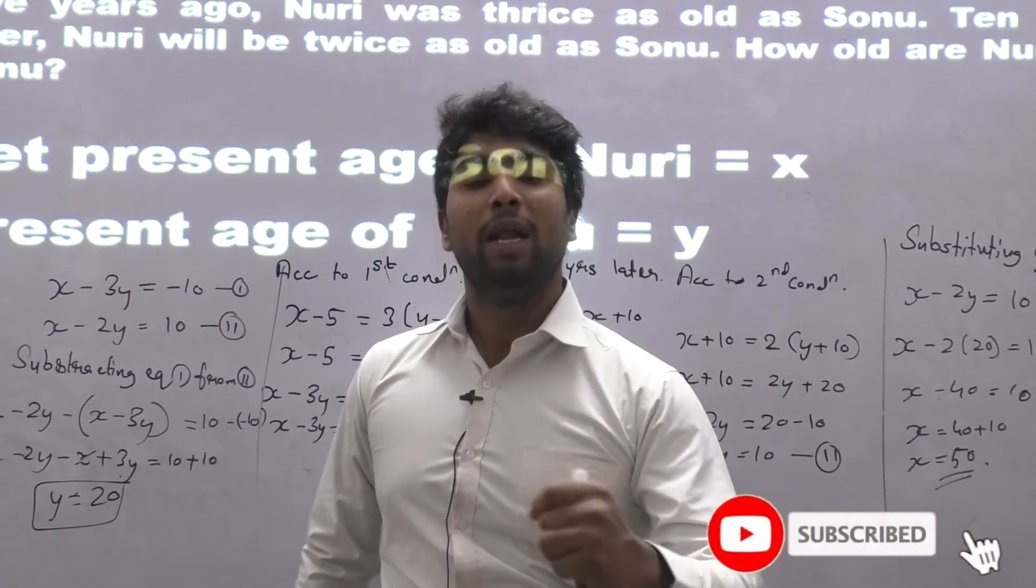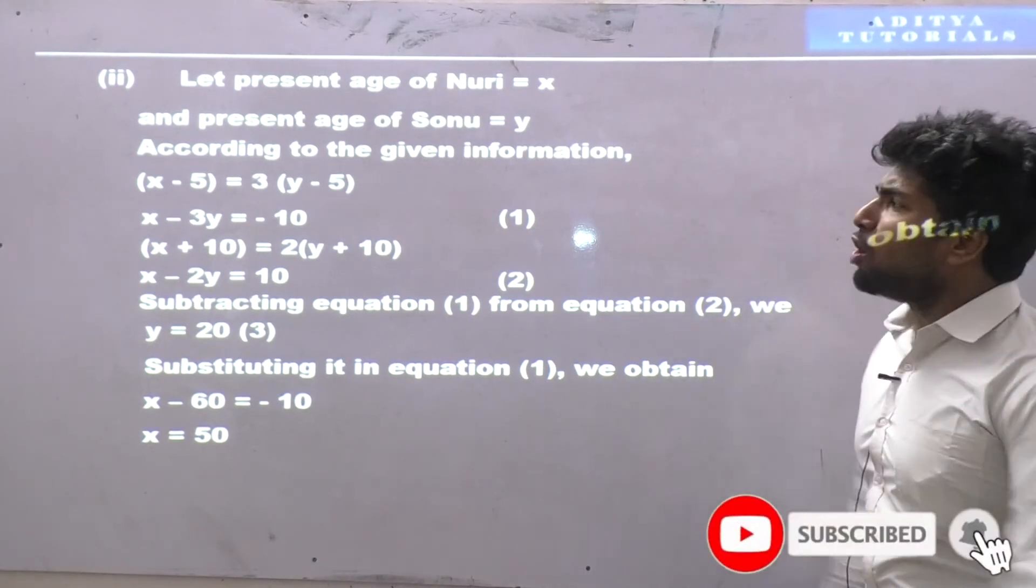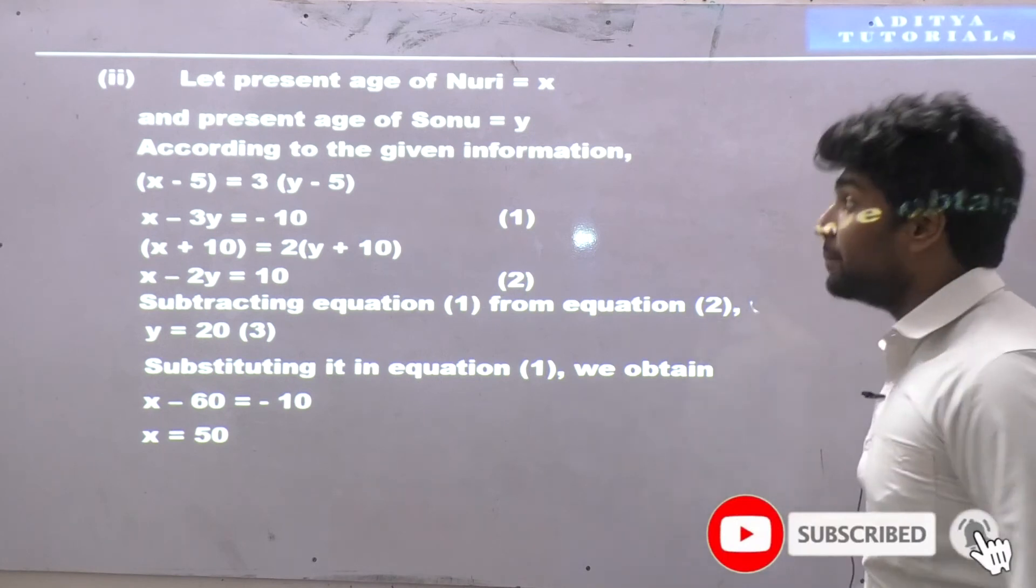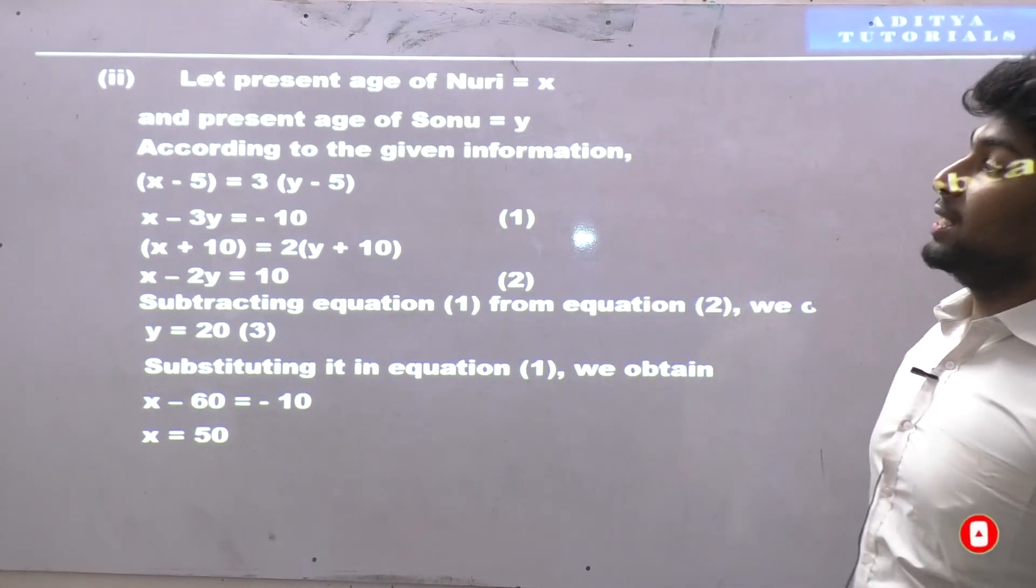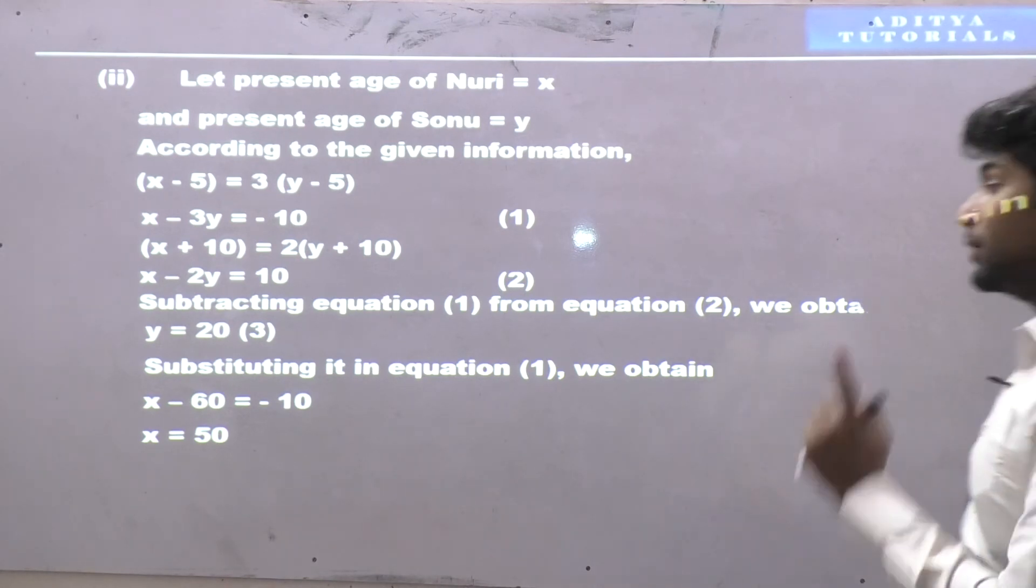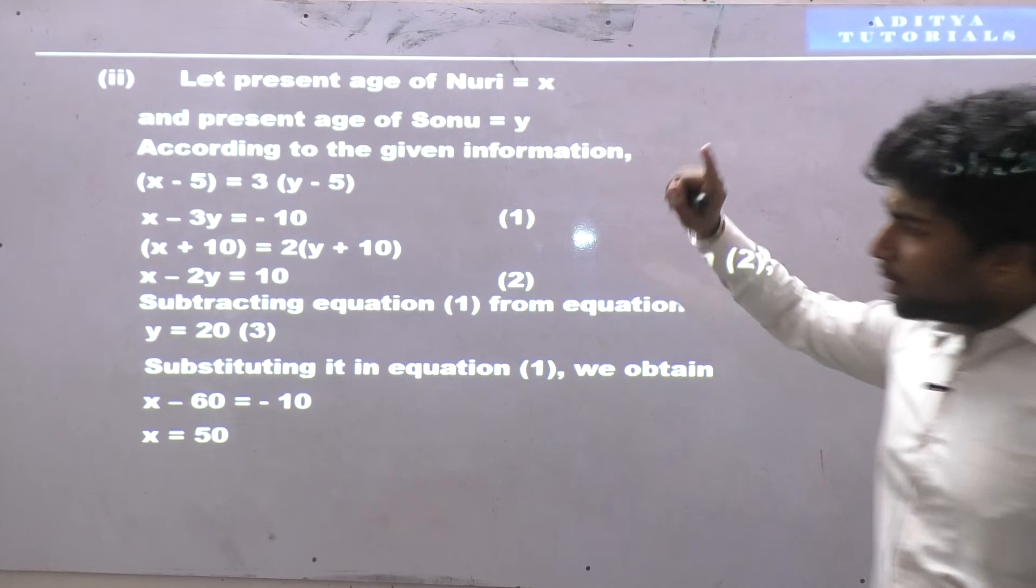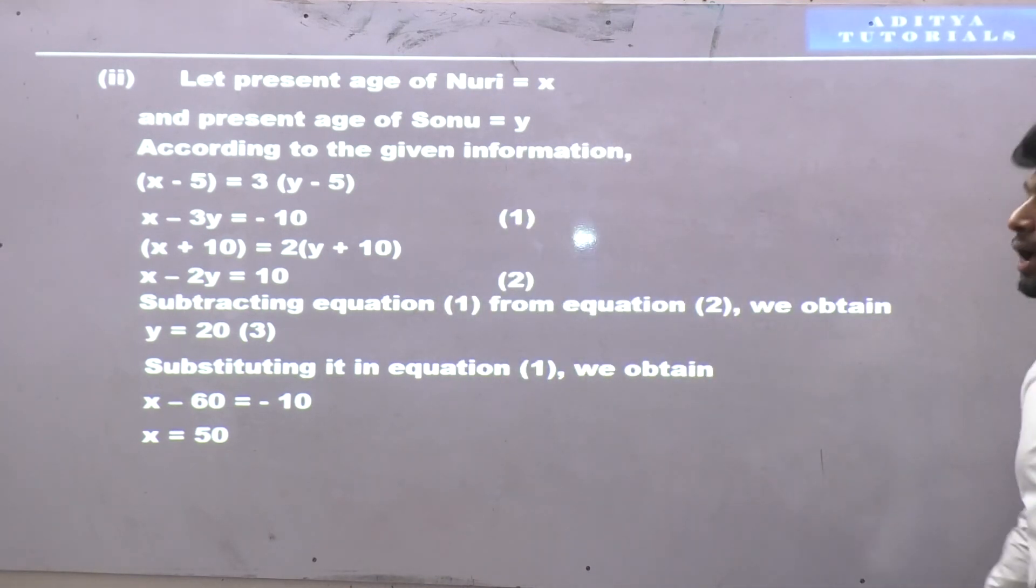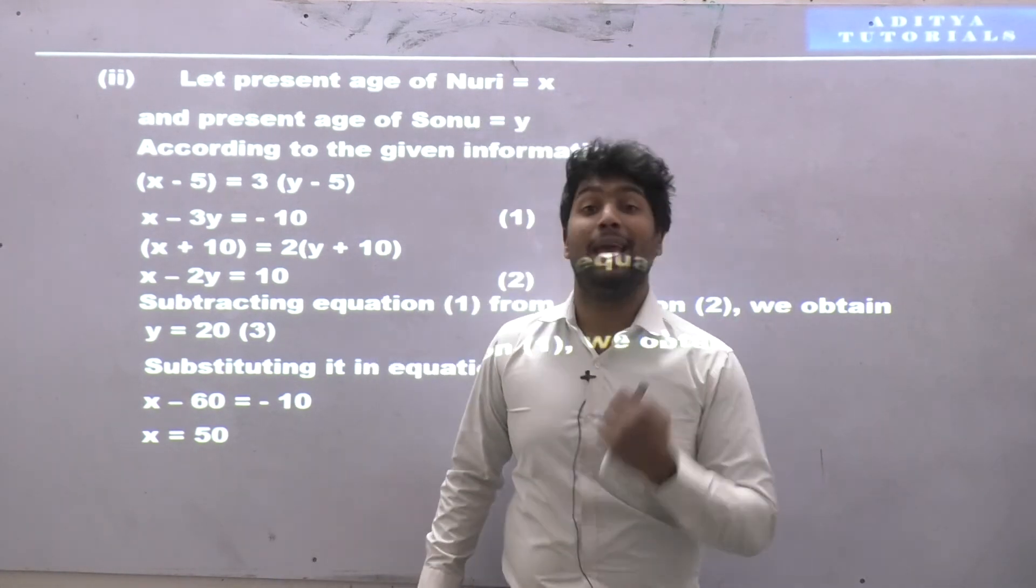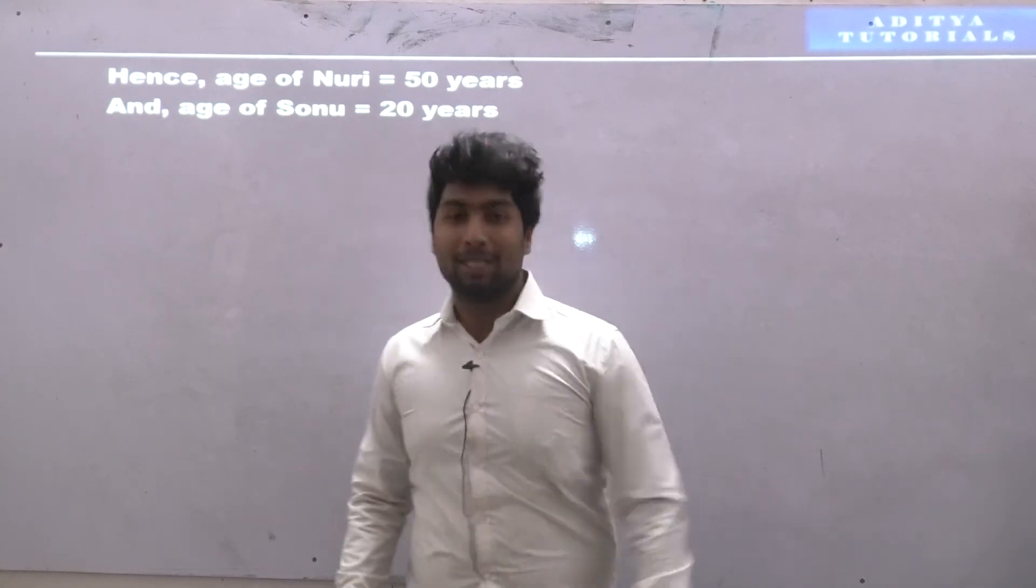Let me show you how to represent this in exams. The present age of Nuri is x years and Sonu is y years. According to condition 1, x minus 3y equals minus 10, equation 1. According to the second condition, x minus 2y equals 10, equation 2. Subtracting equation 1 from 2, we get y equals 20. Substituting in equation 1, we get x equals 50. Hence Nuri's age is 50 years and Sonu's age is 20 years. If you like it, do share and subscribe. Thank you.